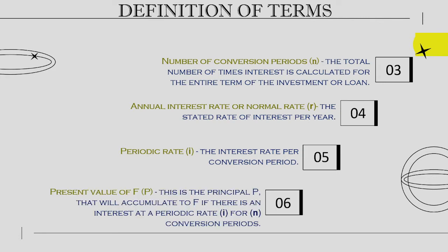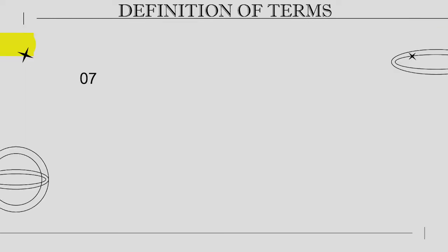Present value of F: this is the principal P that will accumulate to F if there is an interest at a periodic rate I for N conversion periods.